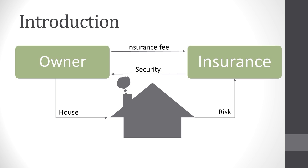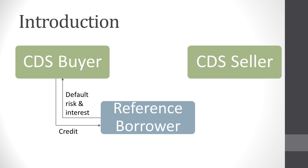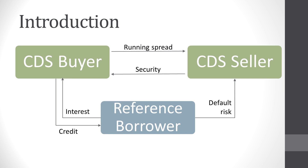A credit default swap is very similar. You have a CDS buyer who gave credit to the reference borrower. So the CDS buyer bears the risk of default. This risk is compensated with an interest, which the CDS buyer receives for granting the credit. However, if the CDS buyer does not want to bear that risk, he can make a credit default swap with the CDS seller. The CDS seller takes on the obligation to pay the insured sum to the CDS buyer in case of default. The insured sum can also be larger or smaller than the actual credit granted to the reference borrower. Since the CDS seller does not bear the risk for free, he receives a running spread from the CDS buyer, which is the same as the insurance fee in an insurance contract.